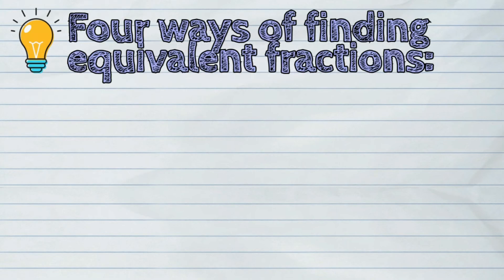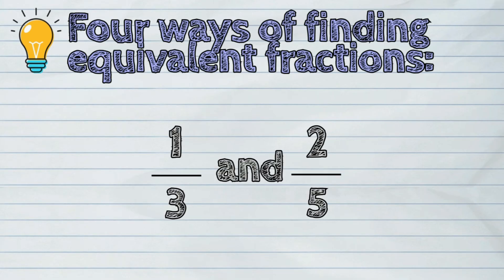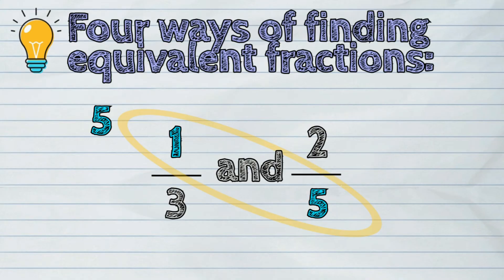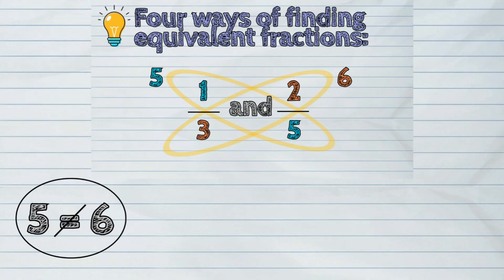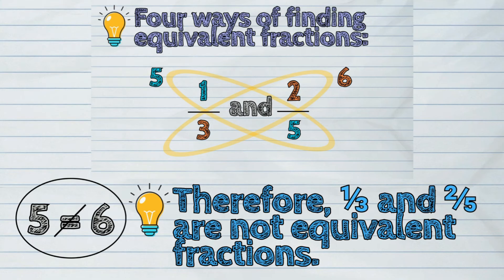How about this example: one-third and two-fifths? Let us apply the cross-product method. Numerator one times denominator five is five. Then, numerator two times denominator three is six. This gives the answers of five and six. Therefore, one-third and two-fifths are not equivalent fractions.